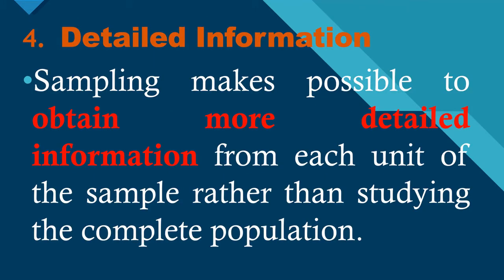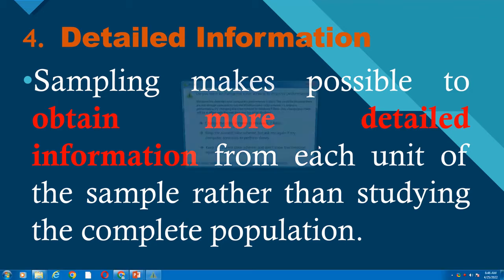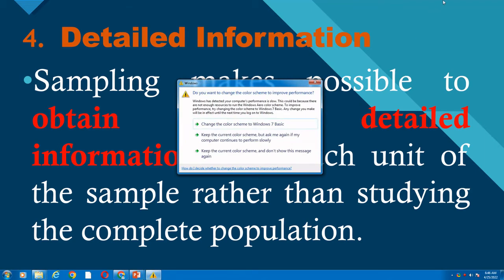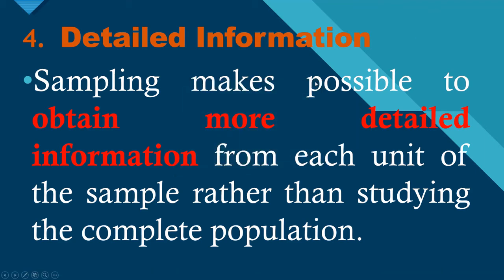Number 4: Detailed Information. Sampling makes it possible to obtain more detailed information from each unit of sample rather than studying the complete population data. When we study a small data set, it is possible for us to obtain more detailed information as compared to studying the complete population.